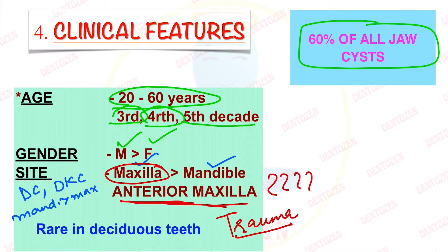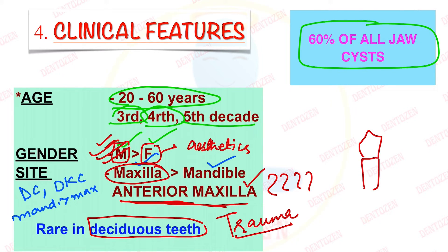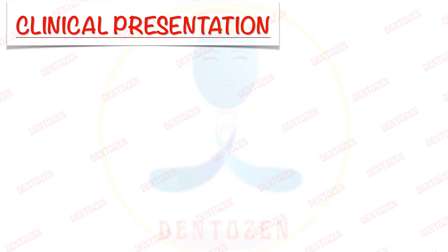This is in contrast to dentigerous cyst and OKC where the mandible is affected more, but in radicular cyst it is the anterior maxilla that is most commonly affected. The reason is that trauma — one of the causes of radicular cysts — most commonly affects the maxillary anterior teeth. Males are affected more because they sustain more injuries, and females are less affected because they take better care of their maxillary anterior teeth due to aesthetics. Formation of radicular cysts is rare in the deciduous dentition because deciduous teeth drain infection readily.